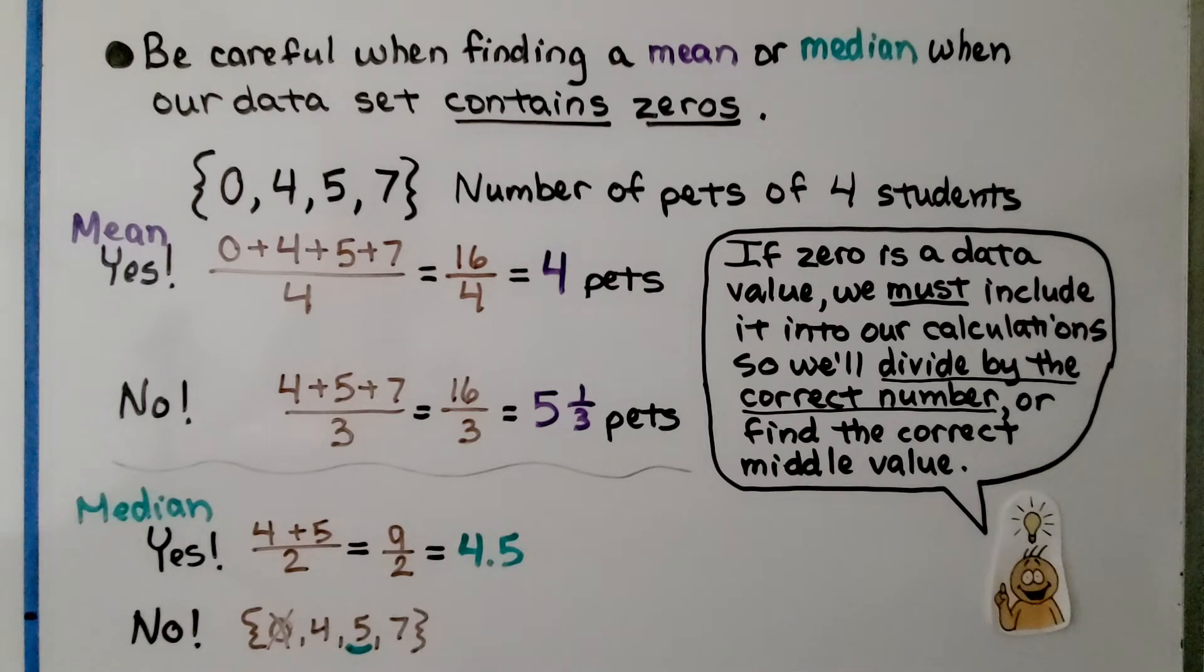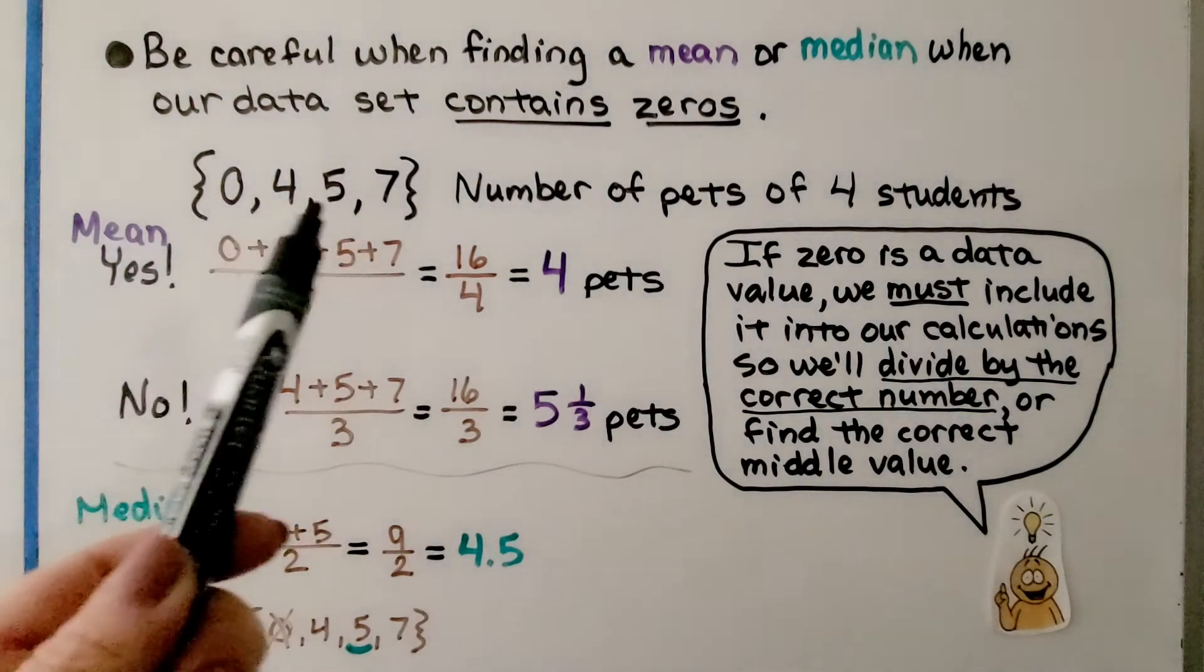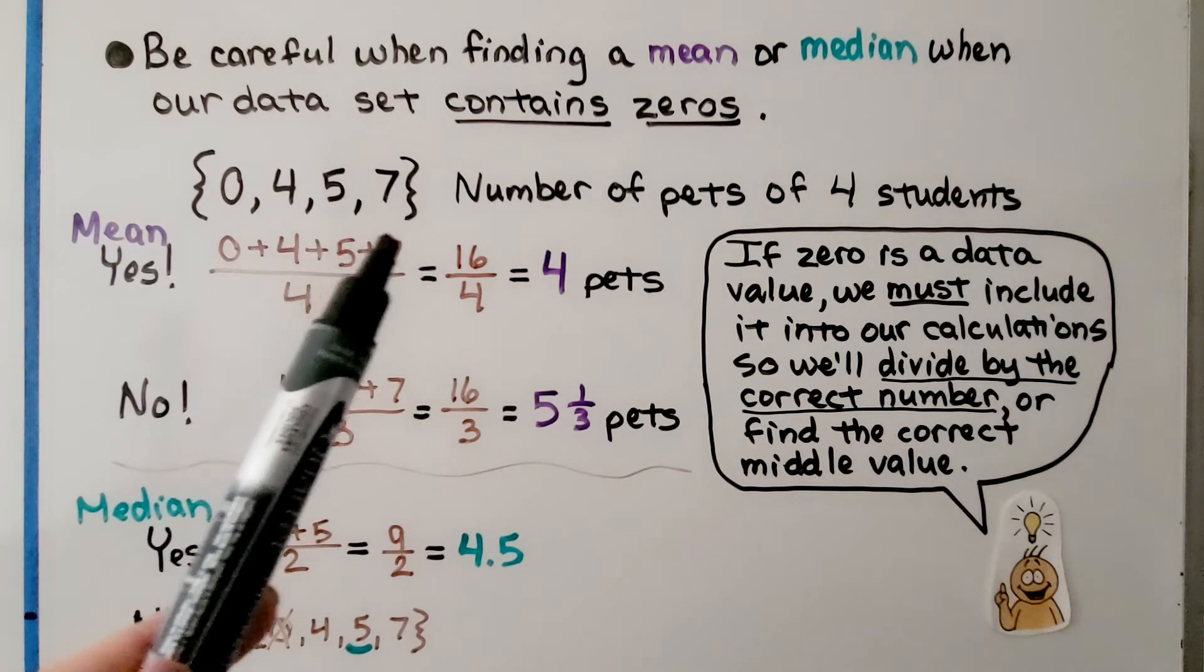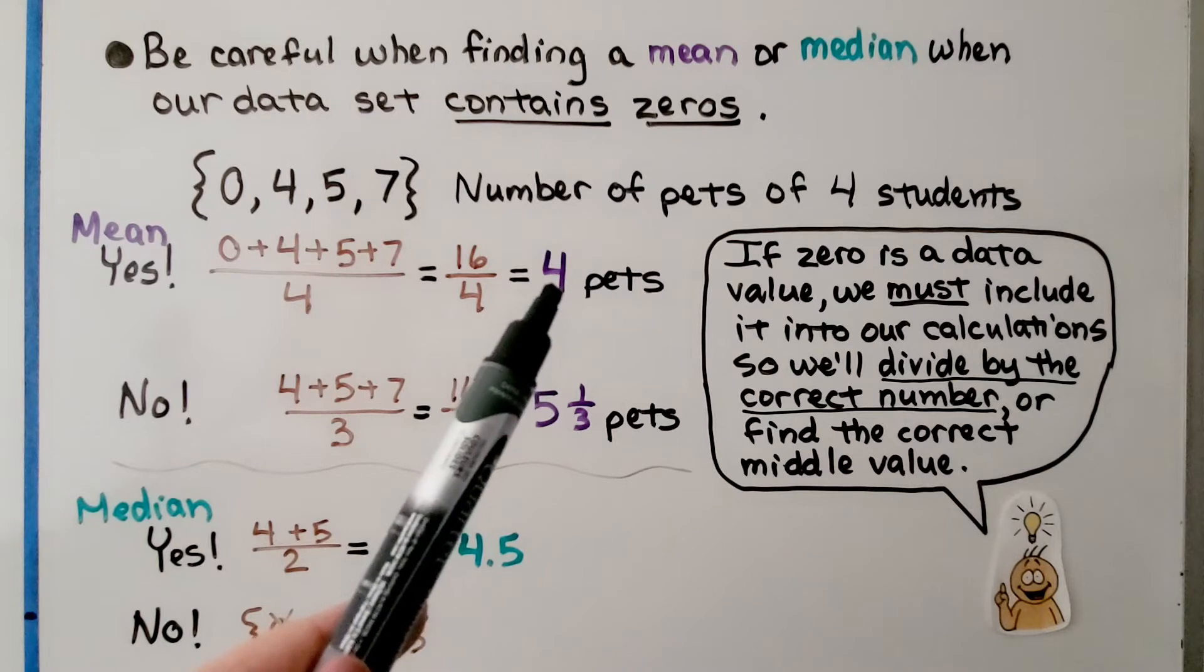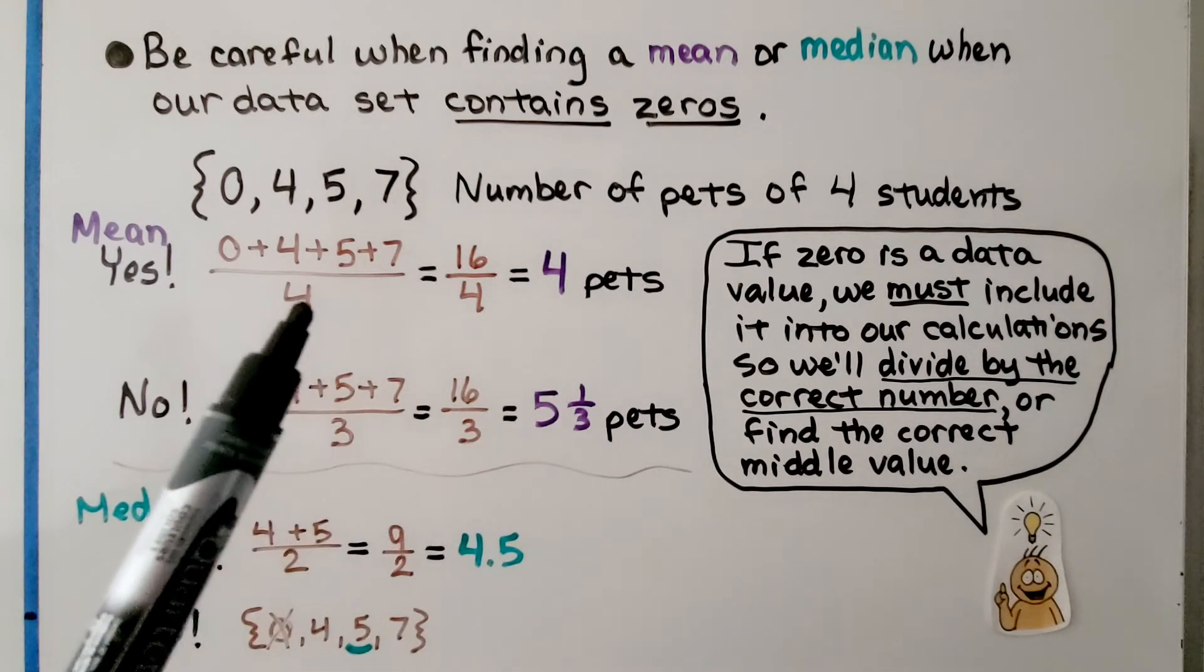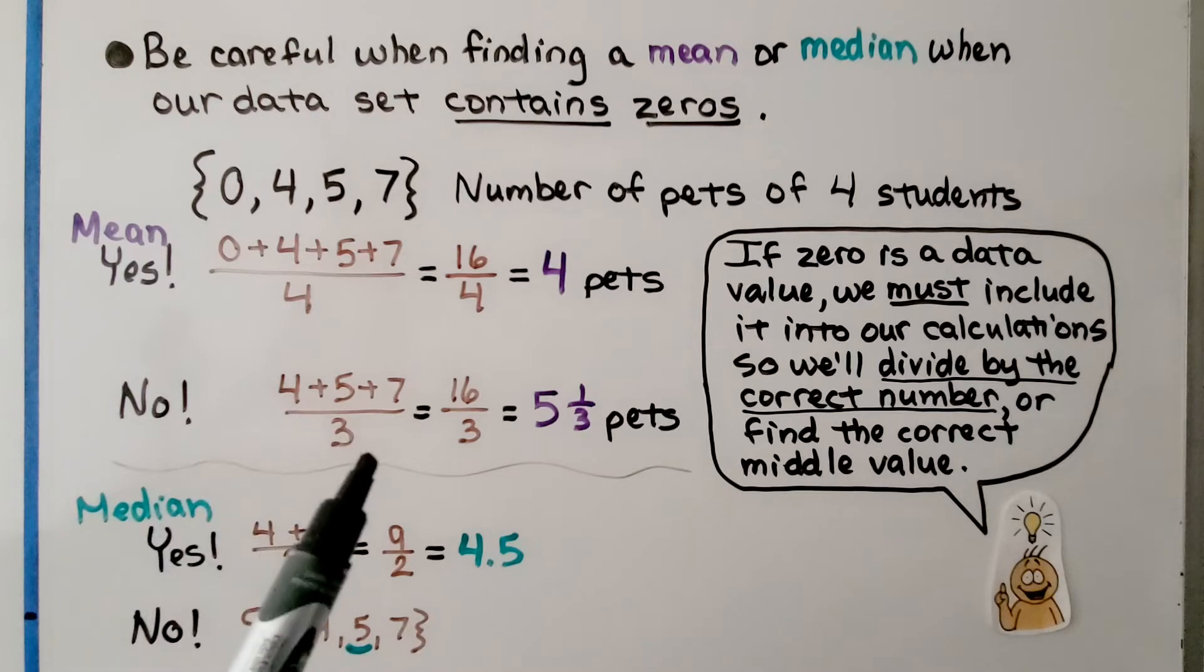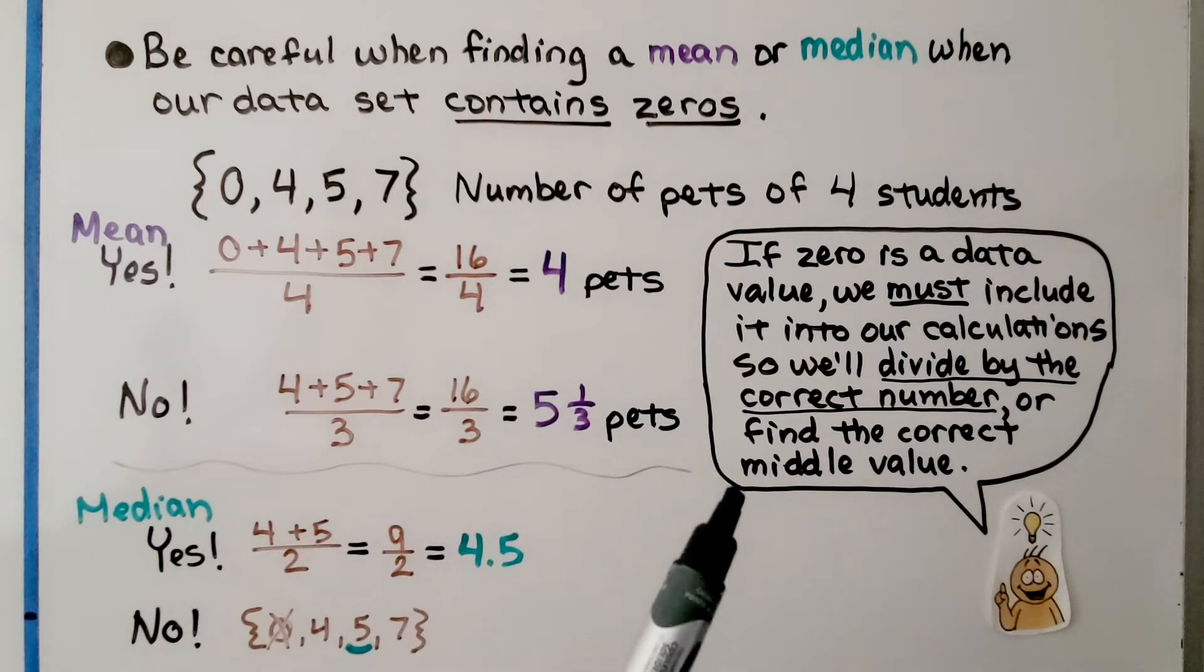Now be careful when finding a mean or median when our data set contains zeros. The zeros are important. We have 0, 4, 5, and 7 in our data set representing the number of pets of 4 students. To find the mean, we add 0 plus 4 plus 5 plus 7, and because there's 4 numbers, we divide by 4. The mean is 4 pets. We needed that 0 to divide by 4. If we didn't include the 0, we'd be dividing by 3 and get a different mean, which would be wrong. If 0 is a data value, we must include it in our calculations.